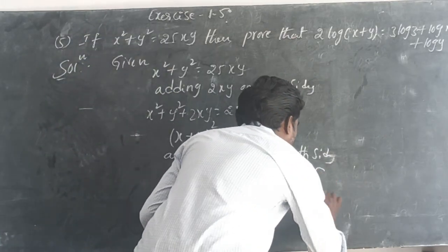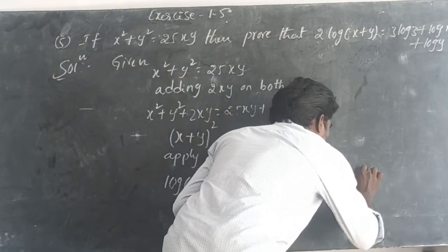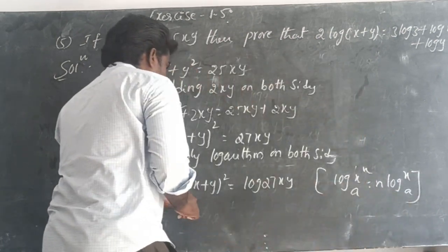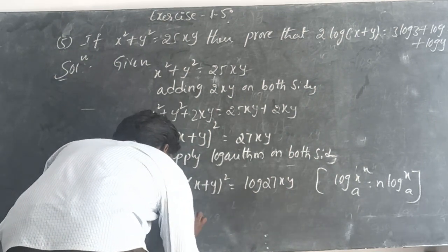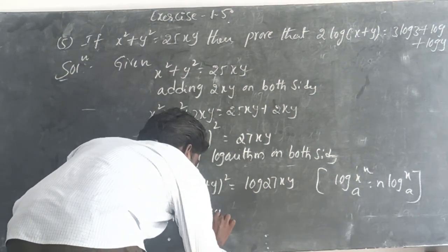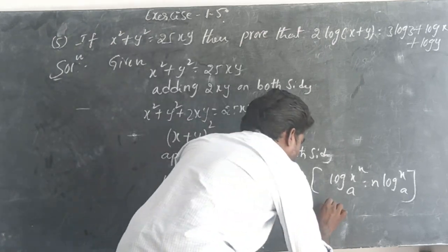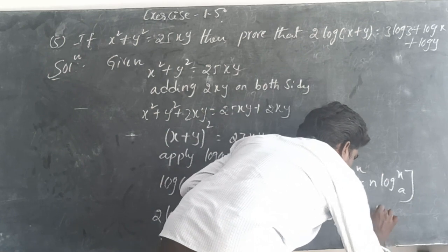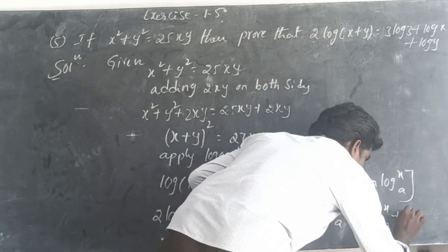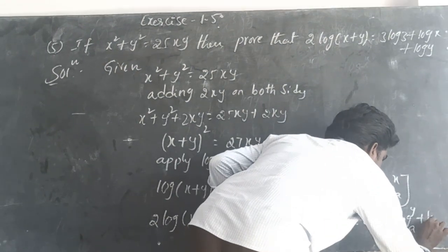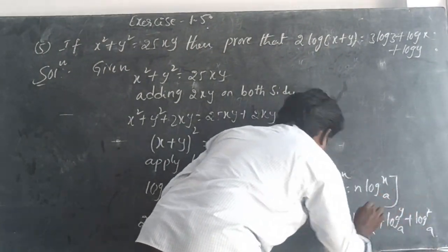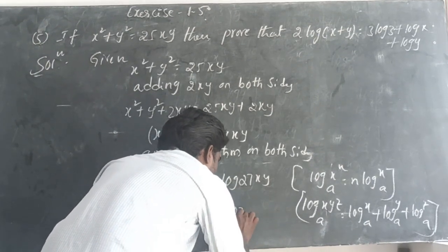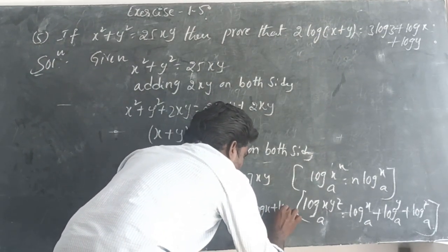Here we can use the formula: log x^n base a equals n log x base a. So 2 log of (x+y) equals log 27xy. Again, using the formula log(xyz) base a equals log x base a plus log y base a plus log z base a, the right side becomes log 27 plus log x plus log y.